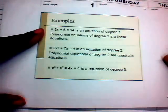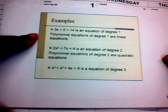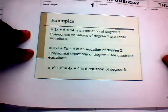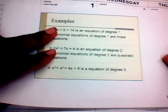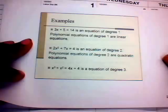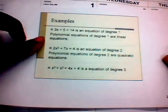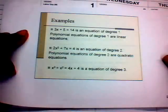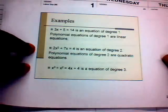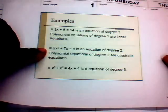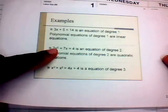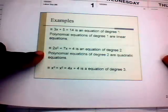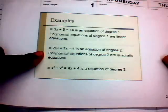We'll start with a linear equation like 3x + 5 = 14. That's an equation of degree 1, because the highest exponent is 1. Any polynomial equation of degree 1 is a linear equation. Next, 2x² + 7x = 4 is an equation of degree 2, because the highest exponent is 2. Those types of polynomial equations are called quadratic equations.